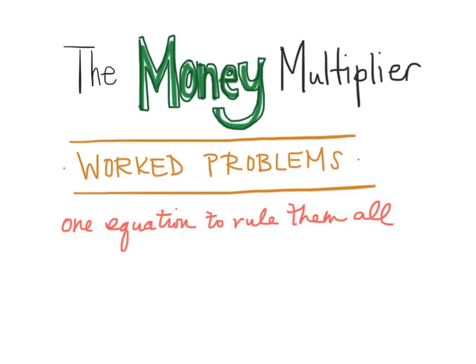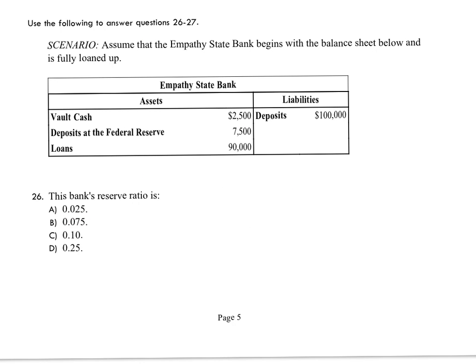There really is one simple equation to work for everything here. On the practice test, we have a problem about reserve ratio. Now there's a difference between the actual reserve ratio — which is what's being asked for here, given this bank's statement of assets and liabilities — and the required reserve ratio that the Federal Reserve decides for banks, which is the minimum they have to hold back. Banks can hold more if they want, so we're being asked for the actual reserve ratio.